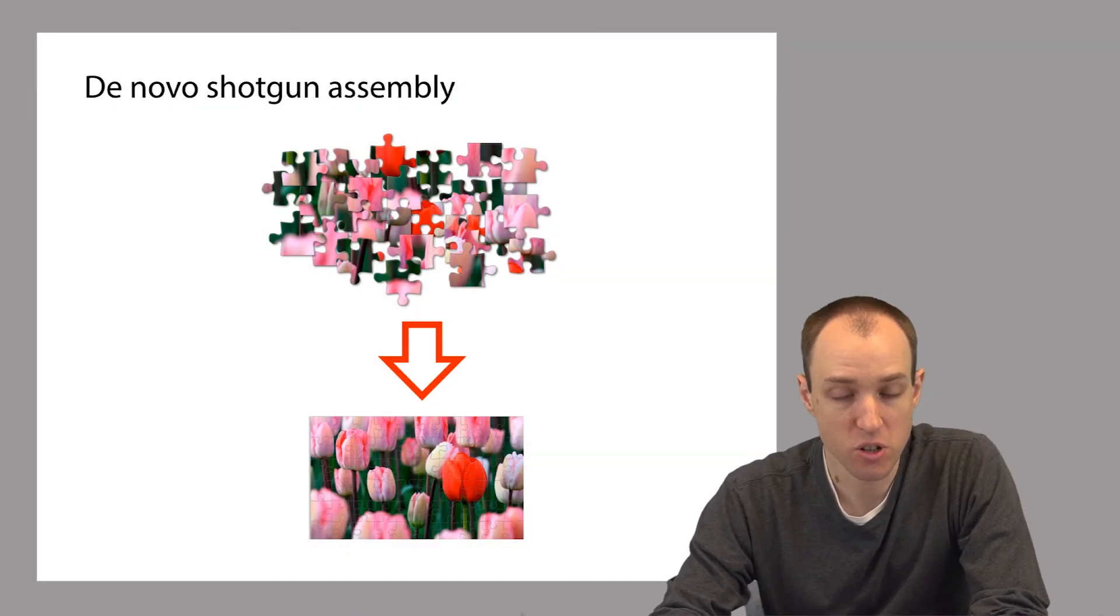So in this version of the problem, we do not have the benefit of being able to see the picture of the completed puzzle. So we might be studying a species that's never been sequenced before. In fact, when the Human Genome Project was conducted, it was the first time a human genome was being completely sequenced. So that project had to solve the de novo assembly problem with respect to the human genome.